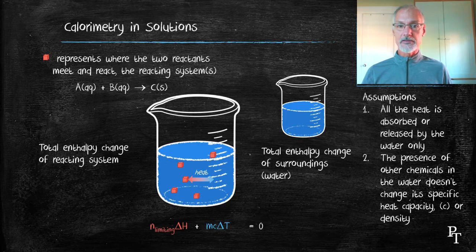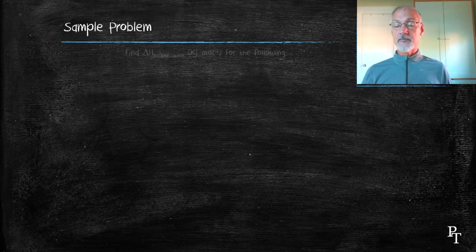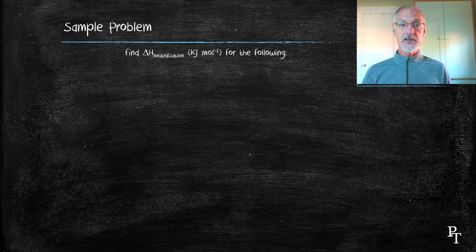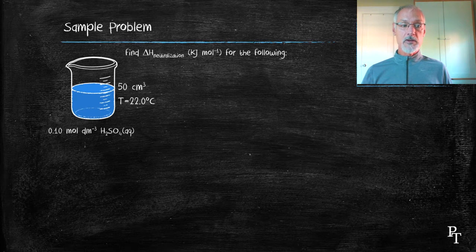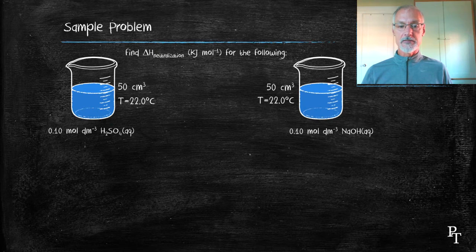Let's work through an example that shows this. We're going to find out the heat of neutralization for mixing together an acid and a base. So here I start off with 50 cubic centimeters of 0.1 molar sulfuric acid.